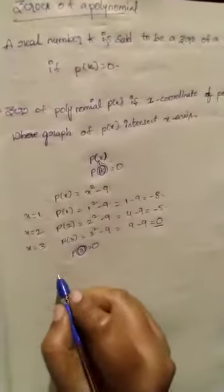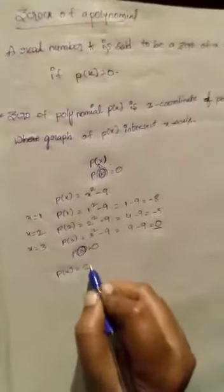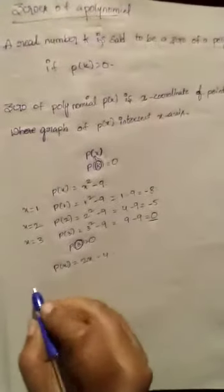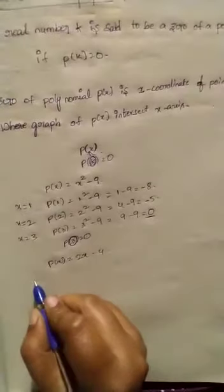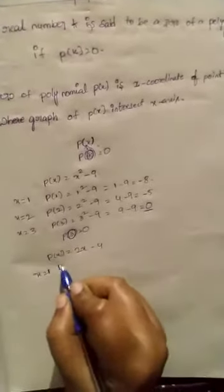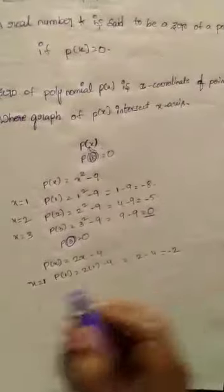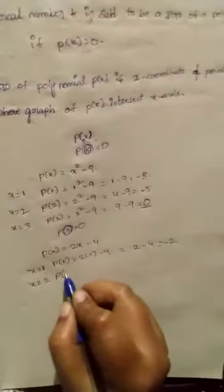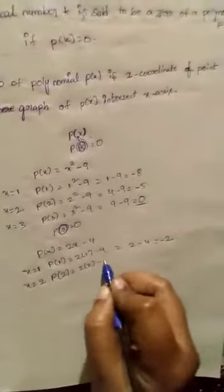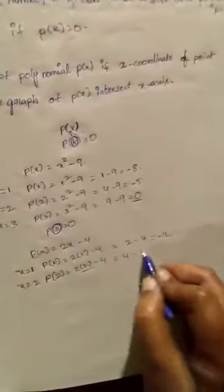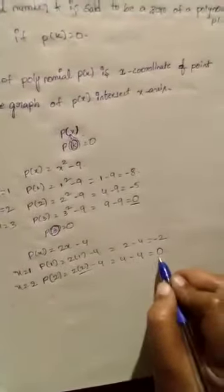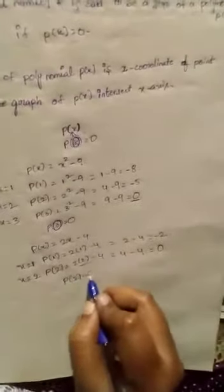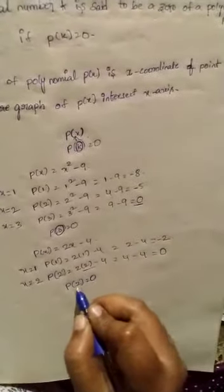See one more example. Let p of x equal to two x minus four. If x equals one, p of one equals two times one minus four, which is two minus four, equal to minus two. If x equals two, p of two equals two times two minus four, which is four minus four, equal to zero. So here p of two equals zero.